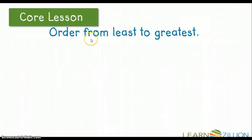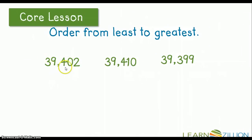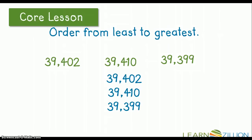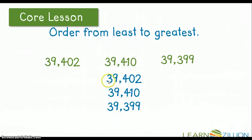Let's take a look at ordering numbers from least to greatest. I have these three numbers: 39,402; 39,410; and 39,399. First, I'm going to line these numbers up by their place value — ones, tens, hundreds, thousands, and ten thousands all lined up — which makes it a lot easier to put them in order. I notice already that all of them have 39 in the ten thousands and thousands places. Looking at the hundreds place, I see a 3 in one number — that means 39,399 is the least.